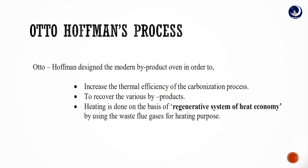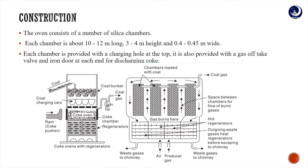Construction: the oven consists of a number of silica chambers. Each chamber is about 10 to 12 meters long, 3 to 4 meters in height, and 0.442 to 0.45 meters wide. Each chamber is provided with a charging hole at the top for feeding coal and a gas offtake for removing fuel waste gases. The finished coke is discharged from an iron door at the end.